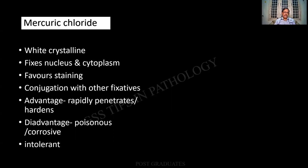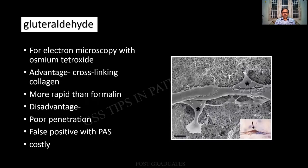Mercury chloride — another fixative. It conjugates with other fixatives and rapidly penetrates. Disadvantage: mercury is poisonous, that is why even in manometers nowadays we have no mercury. Glutaraldehyde — this is something that our eyes do not see at all — electron microscopy, at the nano-micron level. The advantage is there is cross-linking. It is more rapid than formalin but with poor penetration. Sometimes it can give rise to false positive reactions. Of course it is costly and requires technology, technique, and qualified personnel. Please do remember this for electron microscopy.